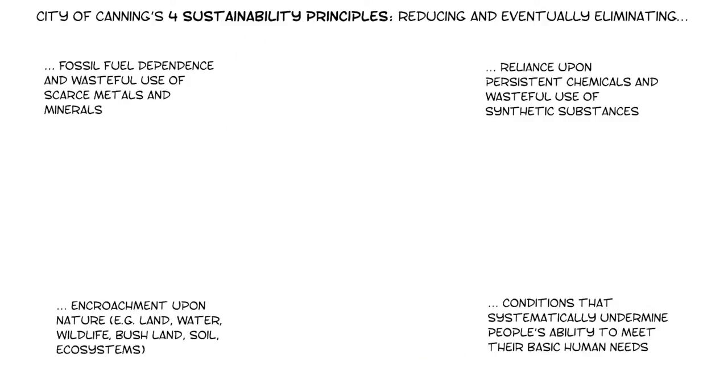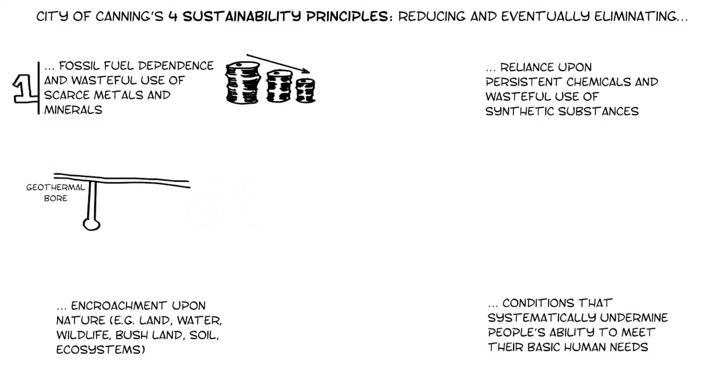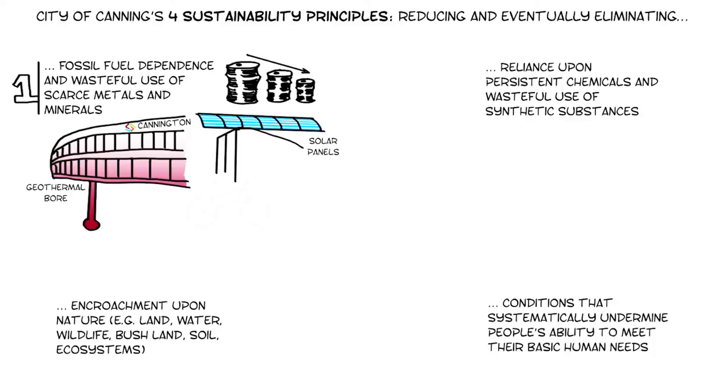At the City of Canning, how are we doing this? Here are some examples. To reduce our fossil fuel use, we've put a geothermal bore at Cannington Leisureplex and are putting a second one at Riverton Leisureplex. We're putting more solar panels on council buildings and solar hot water in sporting change rooms. We're also working on energy efficiency measures throughout council buildings.